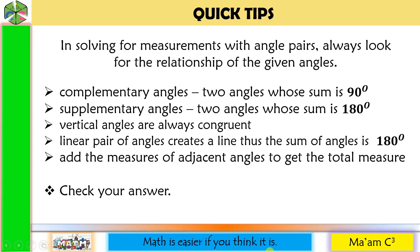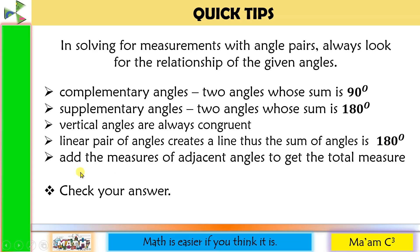Quick tips: In solving for measurements with angle pairs, always look for the relationship of the given angles. Remember: complementary angles are two angles whose sum is 90 degrees; supplementary angles are two angles whose sum is 180 degrees; vertical angles are always congruent; and a linear pair of angles creates a line, so the sum is 180 degrees. Add the measures of adjacent angles to get the total measure. Always check your answer.